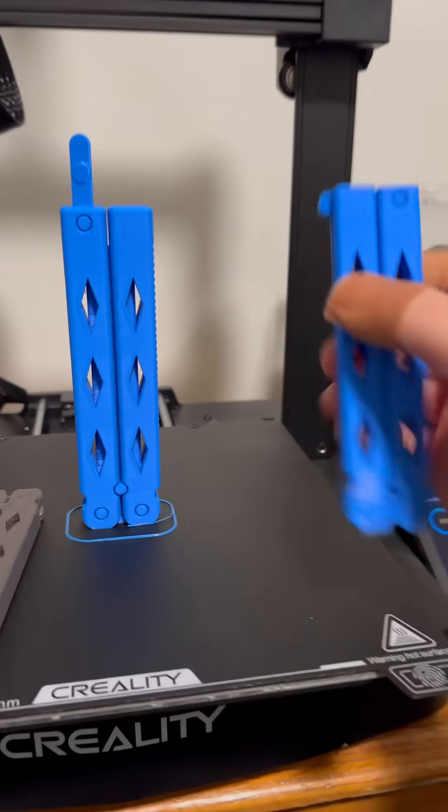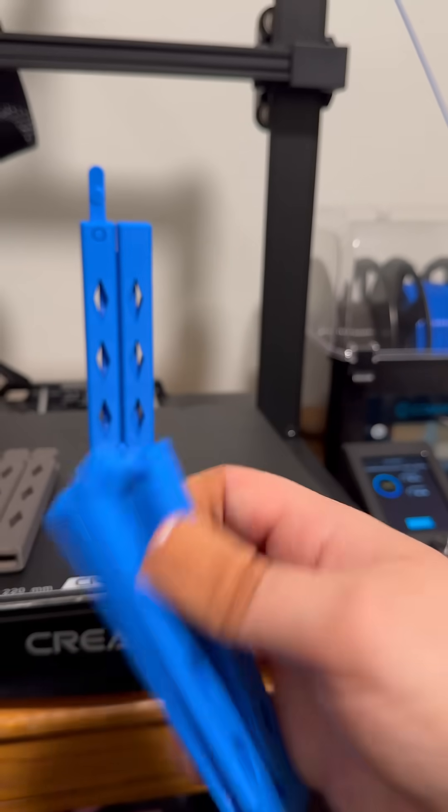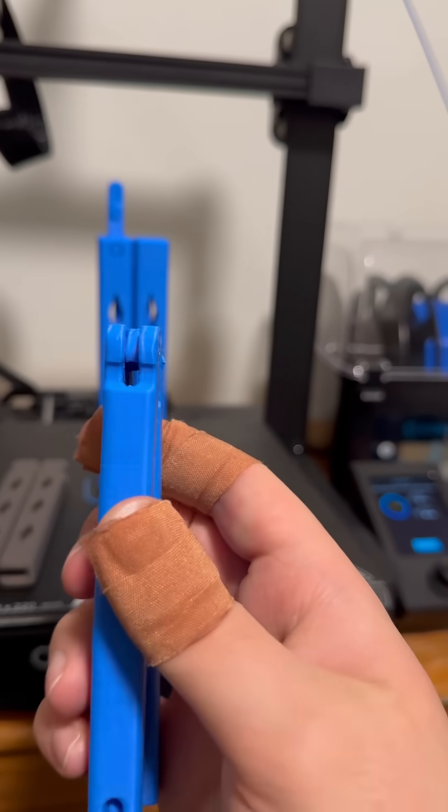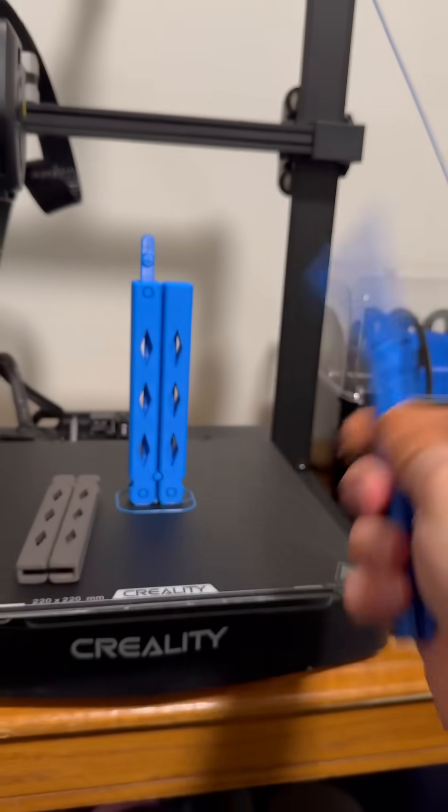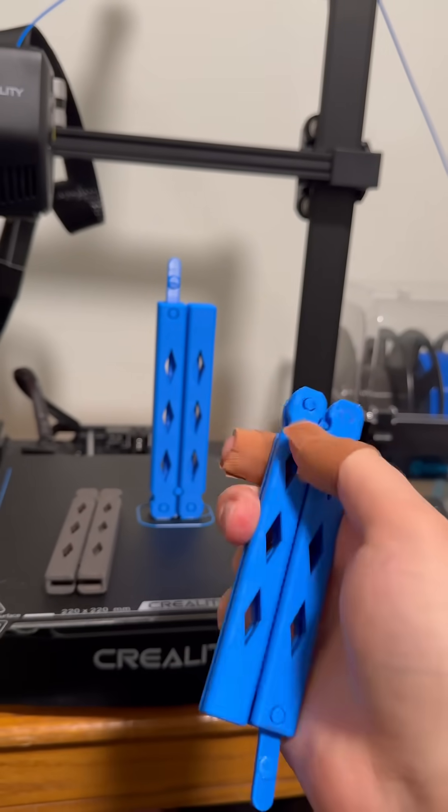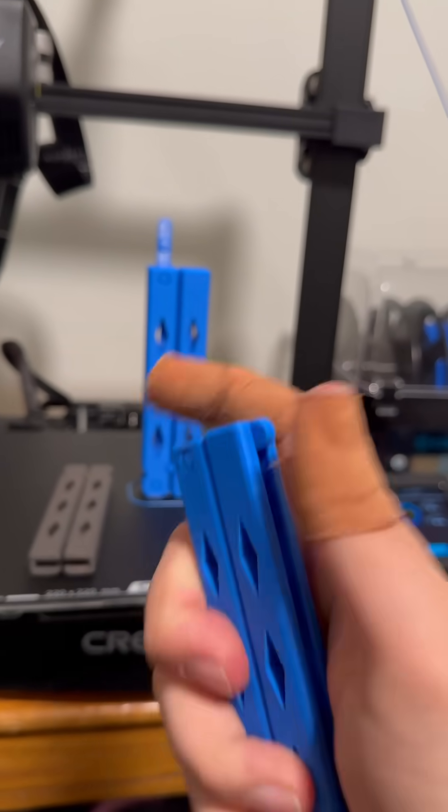Next, we have this one. The blade broke off because the layer lines are vertical, so it was easy to snap, but it flips really well for what it is, and it locks.